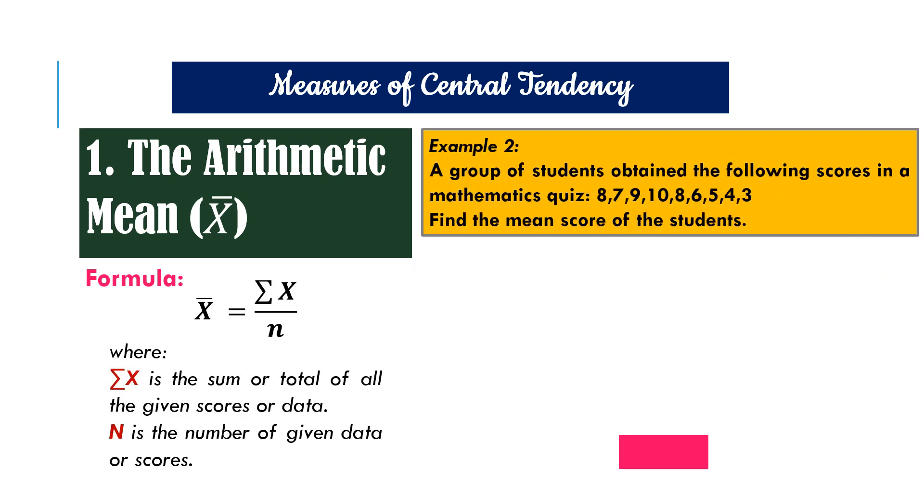Here is example number two. A group of students obtain the following scores in a mathematics quiz: 8, 7, 9, 10, 8, 6, 5, 4, and 3. We will find the mean score of the students.